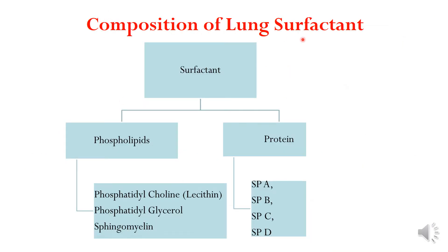Now let us see the composition of lung surfactant. The major molecules that form the lung surfactant include phospholipids and proteins. Chiefly among the phospholipids: phosphatidylcholine (also known as lecithin), phosphatidylglycerol, and sphingomyelin are the chief phospholipids. There are also surfactant proteins, abbreviated as SP — SP-A, SP-B, SP-C, and SP-D.